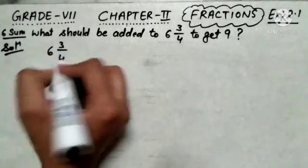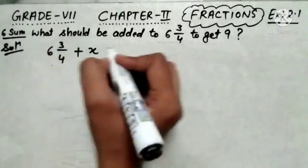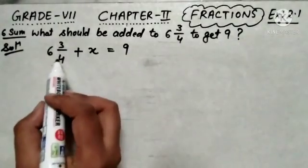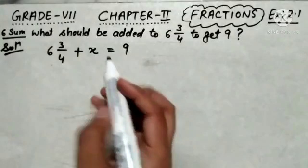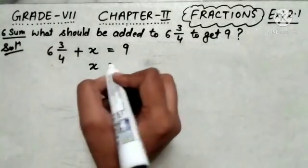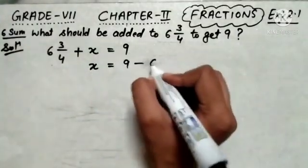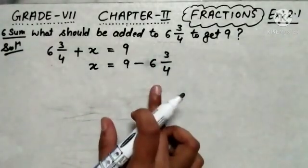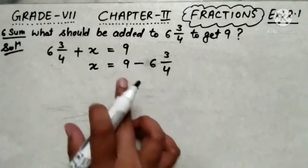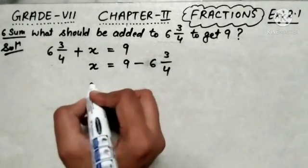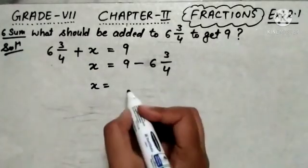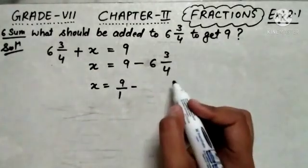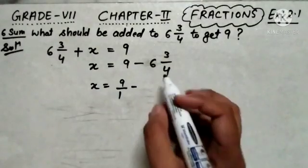We are going to add x into 6 and 3 by 4 to get 9. So we can find the value of x by subtracting 6 and 3 by 4 from 9. This can be written as x equals 9 minus 6 and 3 upon 4. This is quite similar to the 5th sum where we find the difference between two fractional numbers. First of all I will write 9 as 9 upon 1, and this mixed fraction can be written in the form of an improper fraction.